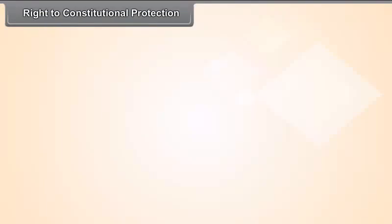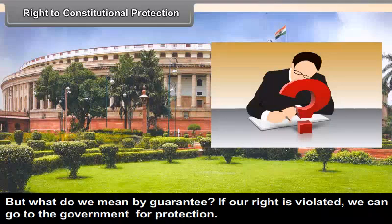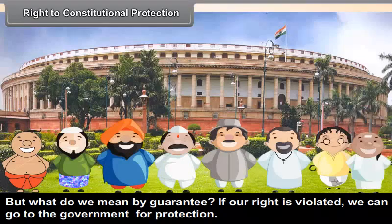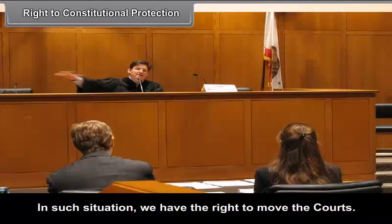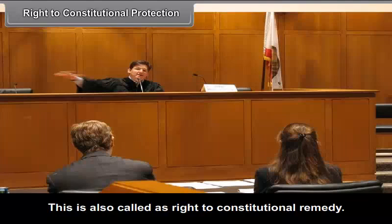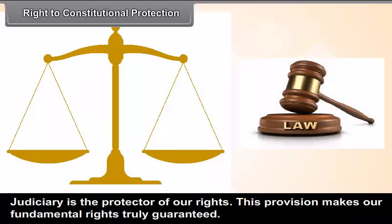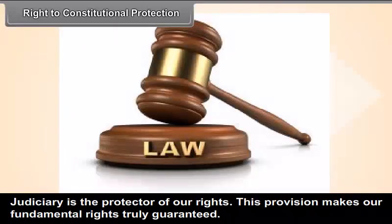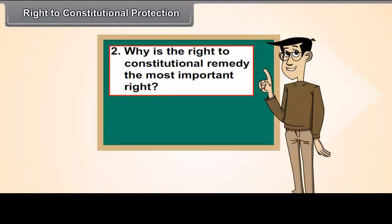Right to Constitutional Protection. We have listed the rights guaranteed by the constitution, but what does guarantee mean? If our right is violated, we can go to the government for protection. But what if some officer or the government itself violated our rights? In such situations, we have the right to move the courts — this is also called the right to constitutional remedy. The court will decide if the government has wrongly interfered with our rights and, if so, ask the government not to do so. The judiciary is the protector of our rights, and this provision makes our fundamental rights truly guaranteed.